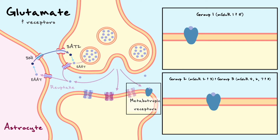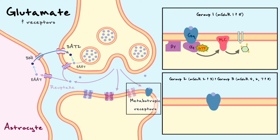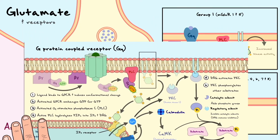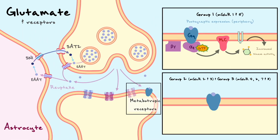Group 1 mGluRs generally activate the GQ G-protein, which activates phospholipase C. This leads to hydrolysis of PIP2 into two second messengers, IP3 and DAG, which subsequently activate different kinases. Group 1 receptors are usually located postsynaptically, and their activation mediates cell depolarization and increased neuronal excitability. In comparison to ionotropic receptors located directly opposite the glutamatergic presynaptic terminal, postsynaptic metabotropic glutamate receptors are usually located on the periphery.